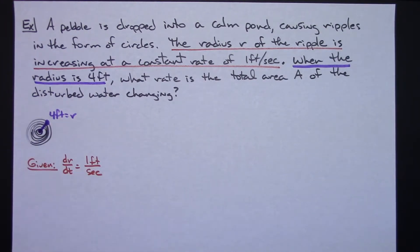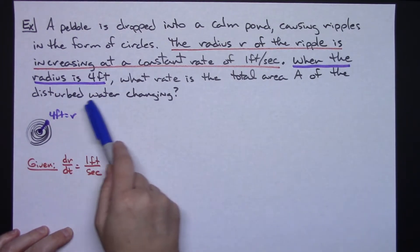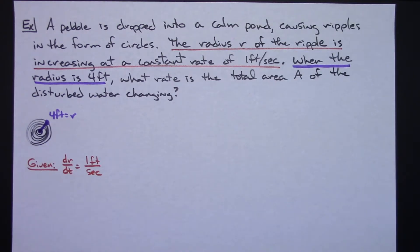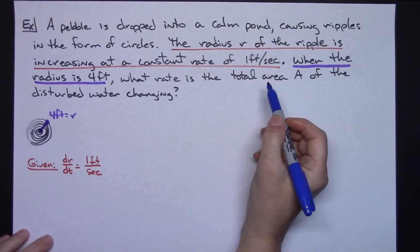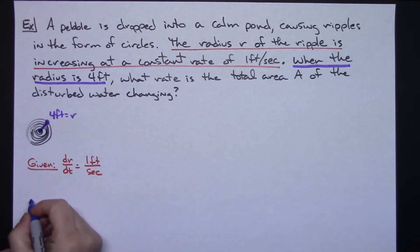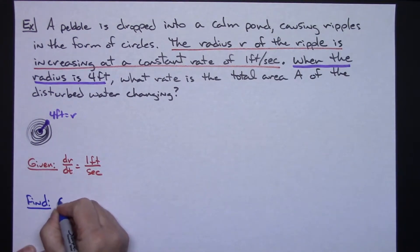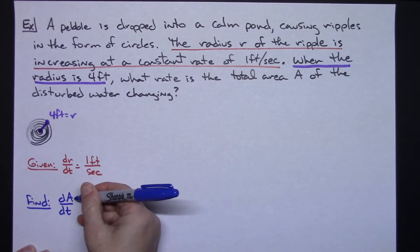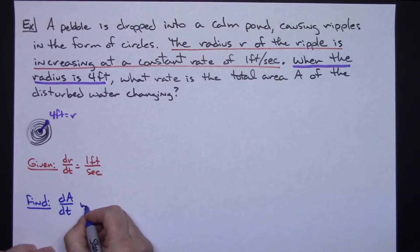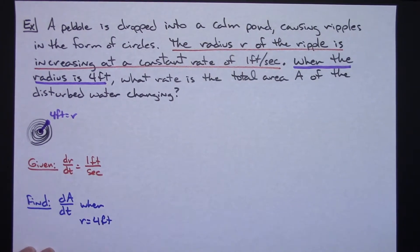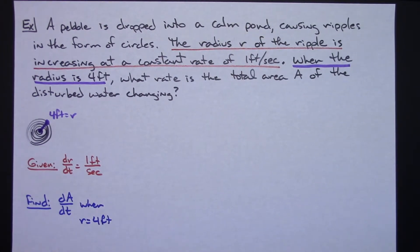What rate is the total area of the disturbed water changing? So I want to know the rate at which the area is changing so I'm trying to find the dA/dt, the rate that the area is changing with respect to time when r equals four feet.